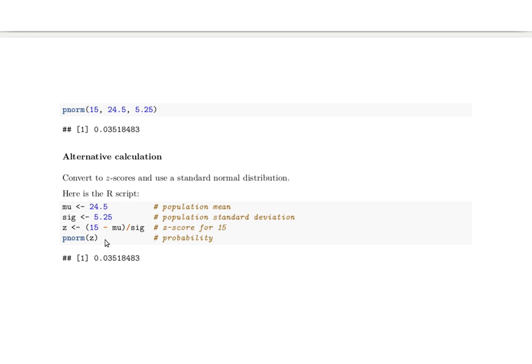We don't need to put comma zero comma one here because we're looking at a standard normal distribution, and you'll notice that we're getting the same result as we got before.